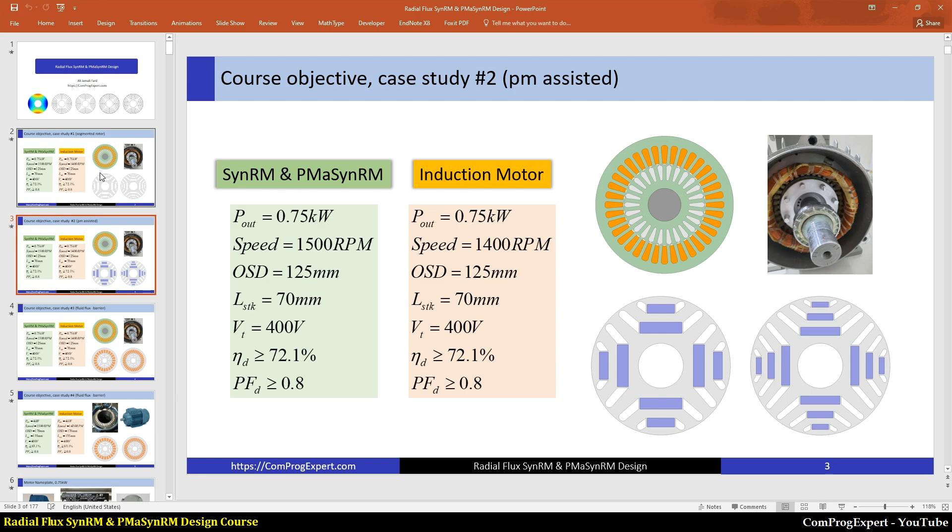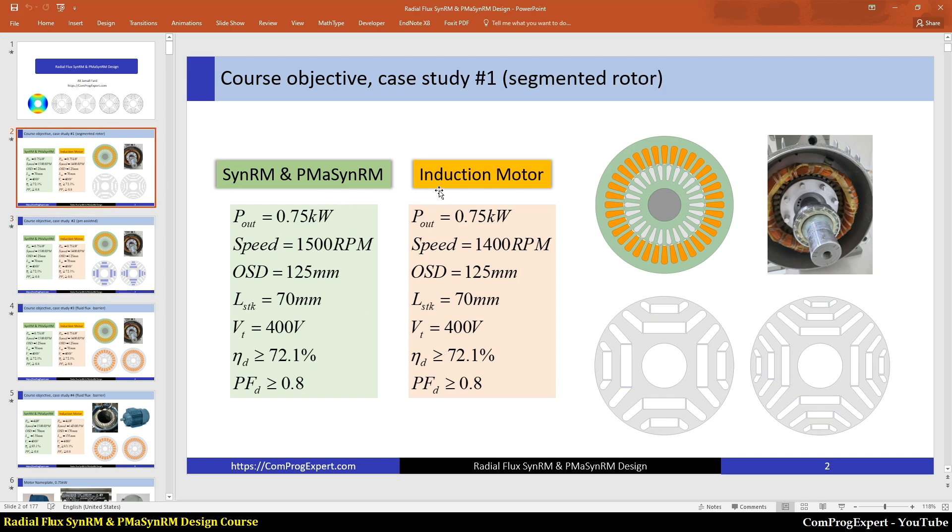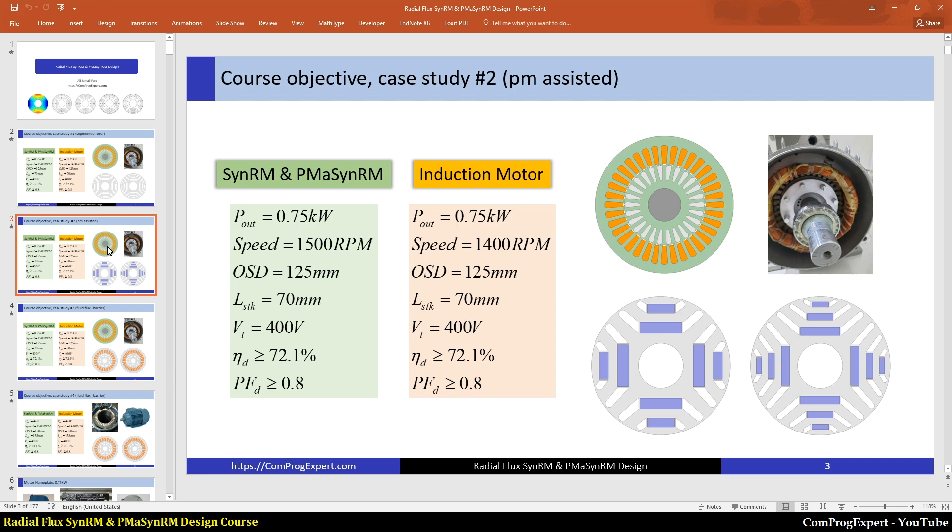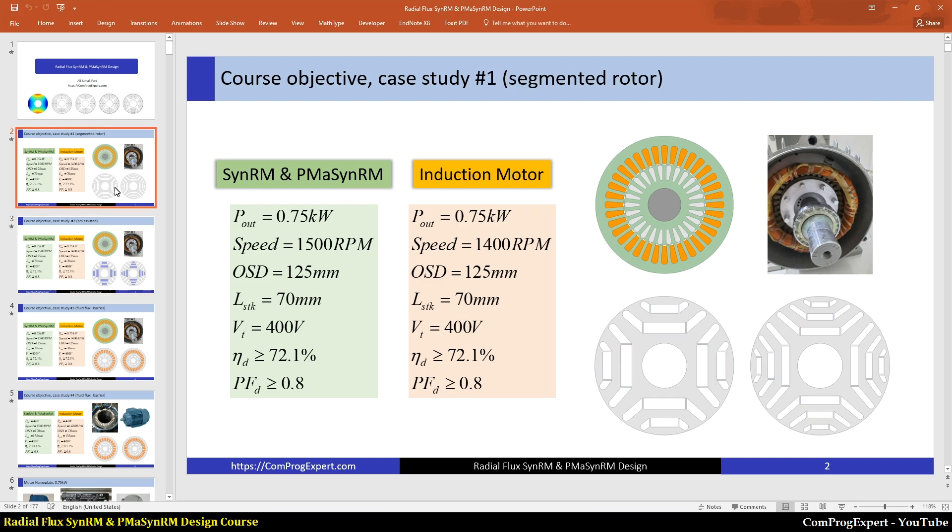So the example one and example two, the benchmark induction motor is the same. This is a synchronous reluctance motor. And here we add magnets to improve the performance characteristics and compare with the first example.